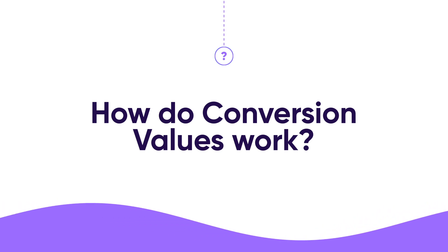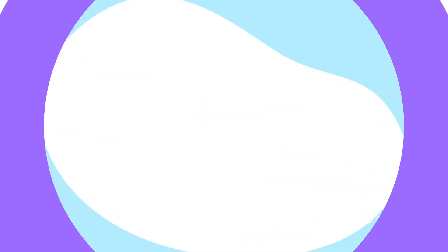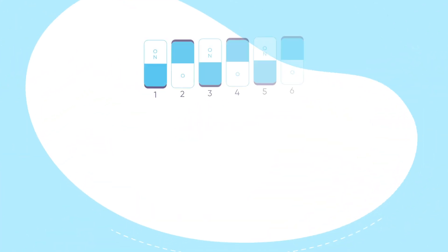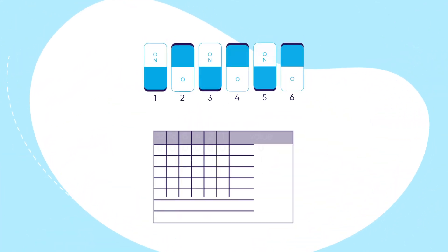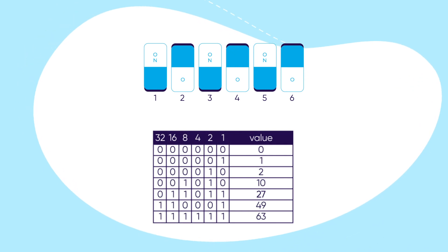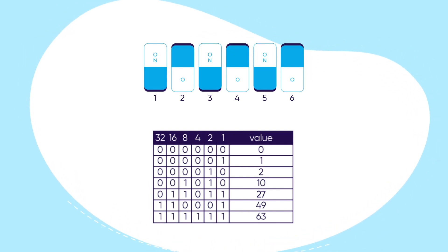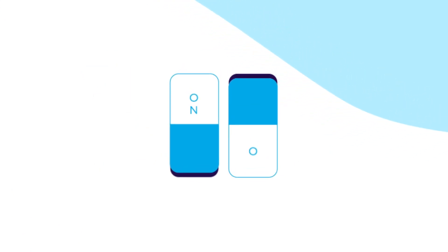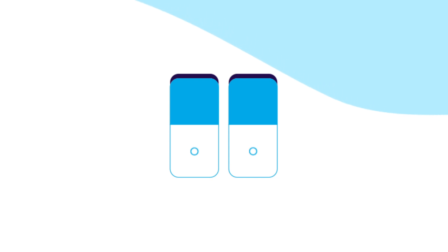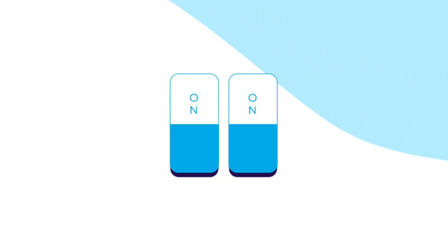What does that look like in practice? In SK Ad Network, conversion values are formatted in binary logic using 6 bits, or 64 signals. You can think of bits like a switch — the switch can either be turned off, meaning the binary digit is 0, or turned on.